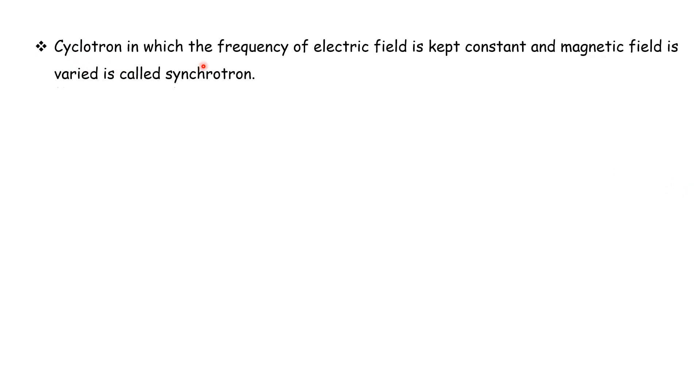A modified cyclotron in which the frequency of the electric field is kept constant and the magnetic field is varied is called a synchrotron.